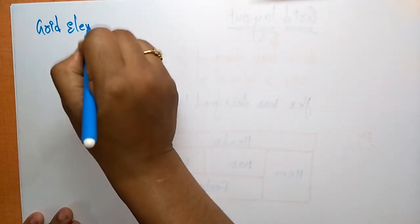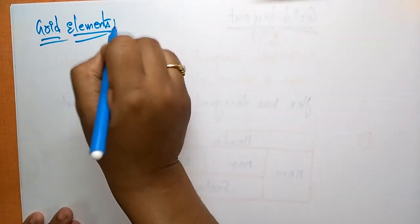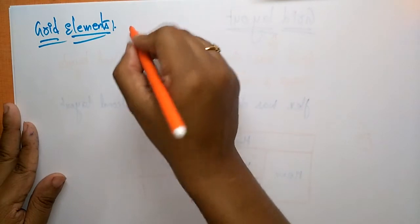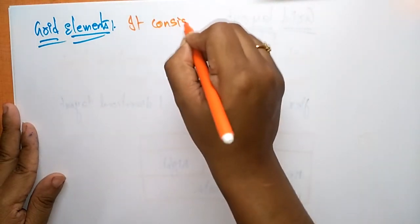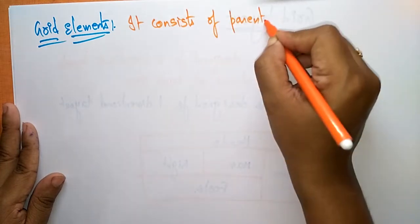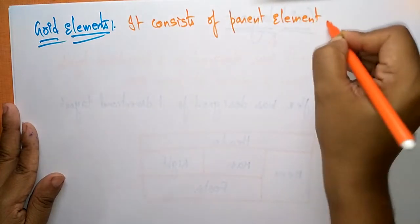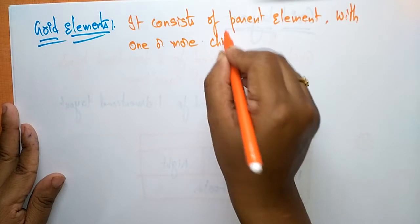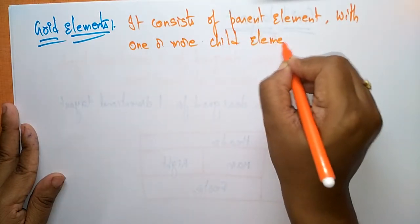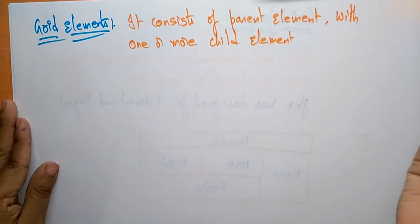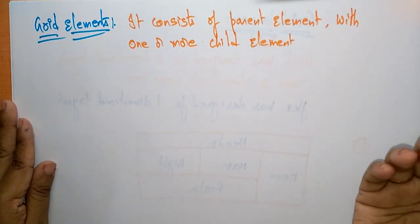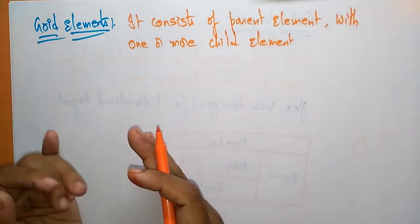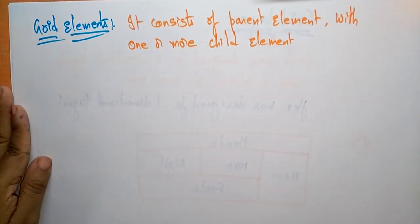Let's see the grid elements — what are the different elements that we use in the grid. Grid layout consists of a parent element with one or more child elements. Just like a flex layout has a flex container and flex items, in the same way the grid layout consists of the parent element as a container and the child elements as the items. Let me write the example.